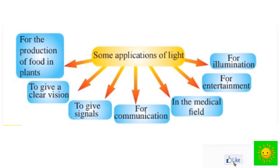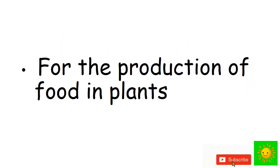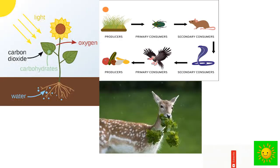Let's categorize the applications of light one by one. First one: for the production of food in plants. Unlike other living organisms, green plants can produce their own food. The energy needed for the process of food production is obtained from sunlight. You all know that all other animals directly or indirectly depend on plants for food. Because of this we consider the production of food in plants is the main advantage of light.